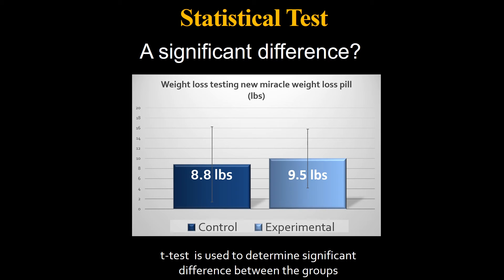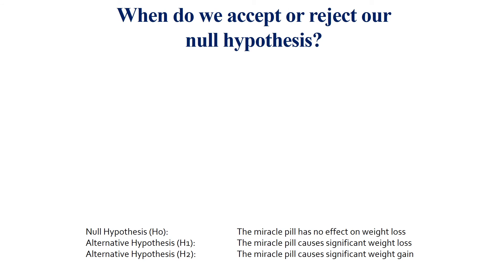In stats, we use several different types of tests to determine the probability that results are random versus not random. One is called a t-test, used to determine significance between two groups. You won't calculate a t-test in Bio 123, but you do want to know how to interpret the data. The question is: when do we accept or fail to reject our null hypothesis, or when do we reject it?